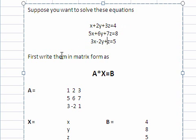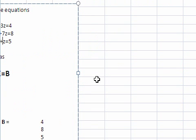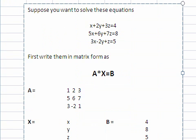First we write these equations in matrix form. A times x equals B. A is the array of coefficients on the left-hand side. B is the right-hand side of the equation. And big X contains the unknowns x, y, and z.